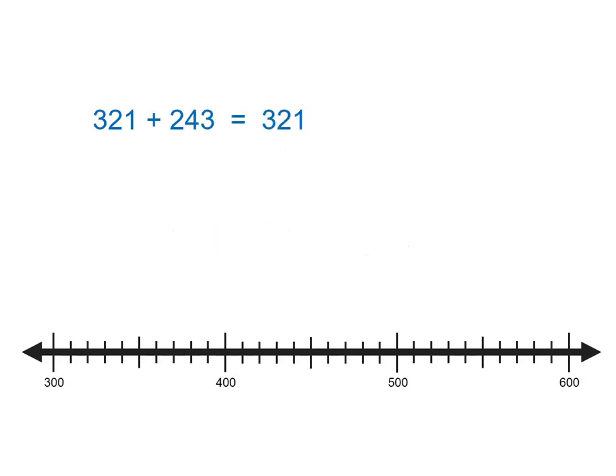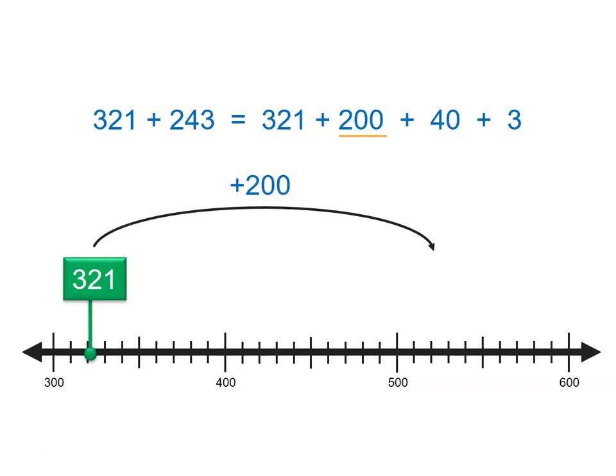This is the same as if we were to add 200 plus 40 plus 3 to 321. If we start with 321 and we add 200, we are at 521.